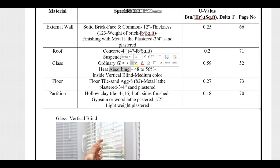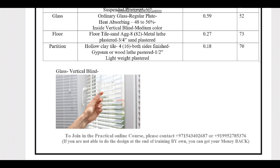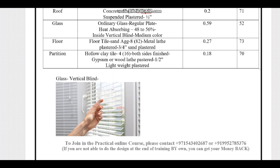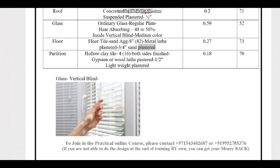For the glass, the type is ordinary regular plate heat-absorbing glass with 48–56% heat-absorbing capacity, with inside vertical blinds of medium color. Referring to Carrier Handbook page 52, Table 16 for heat gain through glass with heat-absorbing glass at 48–50% capacity and inside vertical blinds with medium color, the U-value is 0.59.